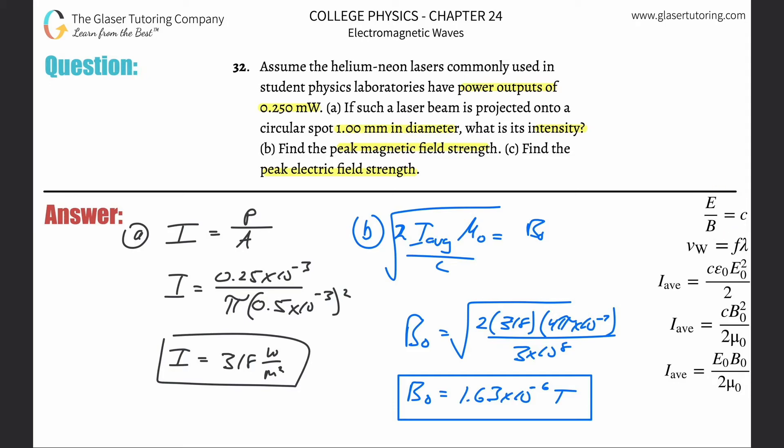Or you can use this formula over here. I'm going to use that because it's a lot easier. So this says that the peak electric field strength divided by the peak magnetic field strength should equal the speed of light. Since I want to find the electric field, just cross multiply that on out and then simply plug in.